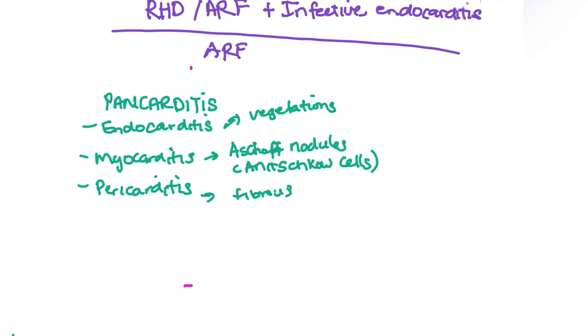In pericarditis, a fibrinous exudate is formed. In an immune response, the body tries to heal by fibrosis, which has a shaggy appearance and is very sticky. It's layered onto the pericardium, which is why they describe it as a bread and butter appearance. Think of the bread being the pericardium with this thick fibrinous exudate layered on it like butter on bread.